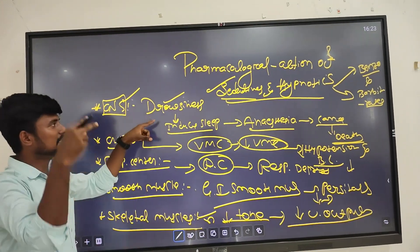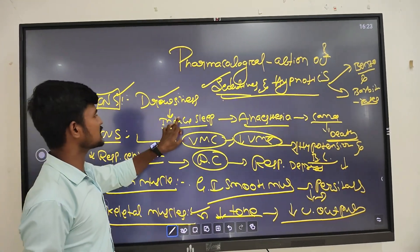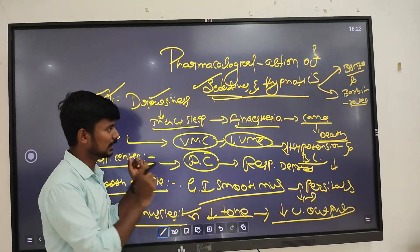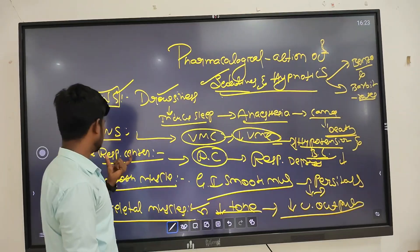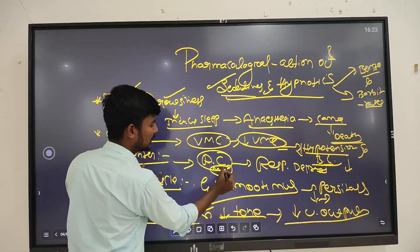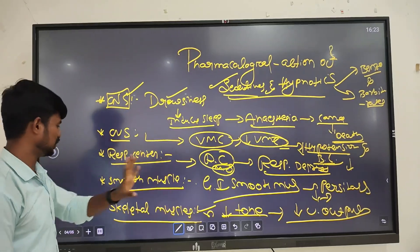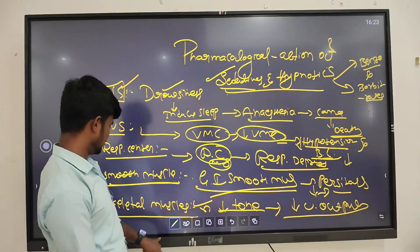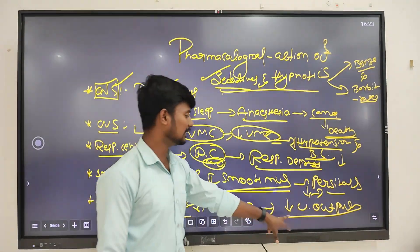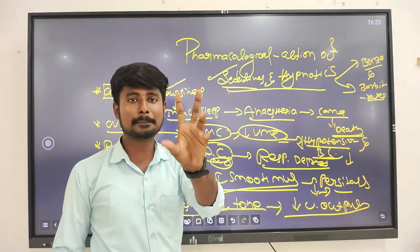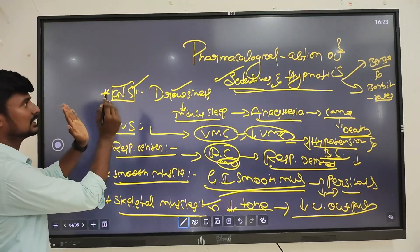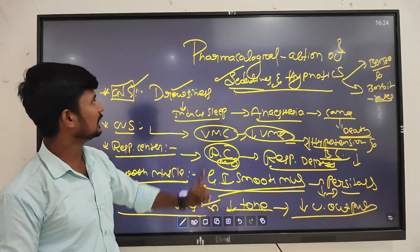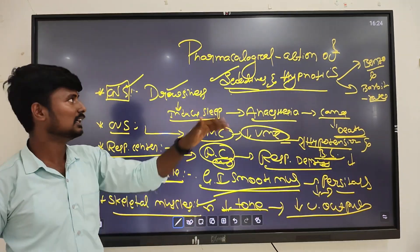Summary of pharmacological actions: CNS - drowsiness, sedation, sleep induction, anesthesia, coma, and death. CVS - acts on the vasomotor center leading to hypotension and bradycardia. Respiratory center in the medulla oblongata - leads to respiratory depression. Smooth muscles - GI smooth muscles relax, decreasing peristalsis leading to constipation. Skeletal muscles - decreasing tone and relaxation.